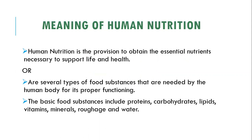Human nutrition is simply the provision of the basic essential nutrients that we obtain from food, which are necessary to support life and health. You can also say that there are several types of food substances needed by the human body for its proper functioning. In order for a body to properly function, it needs various food substances to perform its normal functions.